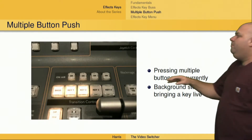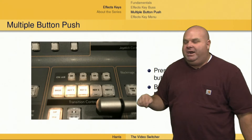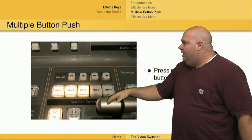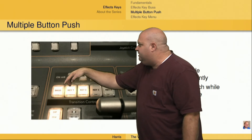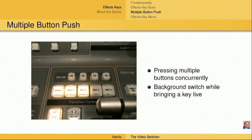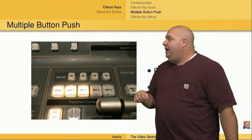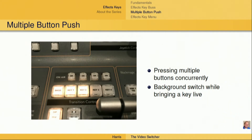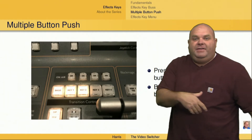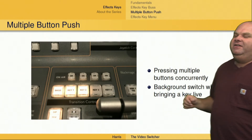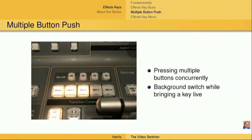Or I can do multiple button pushes at the same time. Let's say that I want to cut the camera, but at the same time I want to bring key one and key two live. What I do is I just use three of my fingers, I push all three of those buttons at the same time, all three of them light up concurrently, and then when I push that cut button, or the auto button, or when I use the fader bar, I can actually bring both of those keys live at the same time that I'm changing the background. So I might want to cut to a camera that has a person, and at the same time have a character-generated graphic with their name and title appear on screen at the same time.